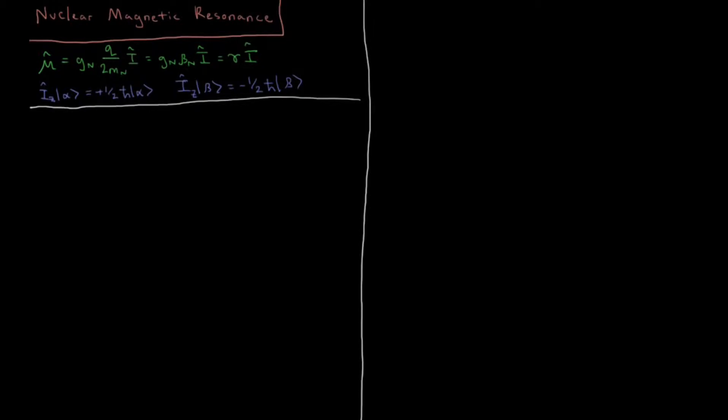In this video we're going to calculate the energy levels of a magnetic dipole interacting with a magnetic field, and how the transitions between these energy levels lead to the phenomenon of nuclear magnetic resonance.